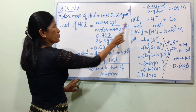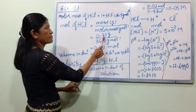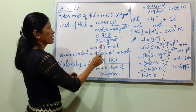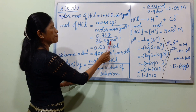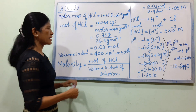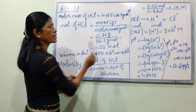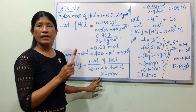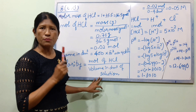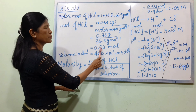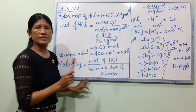The molar mass is 36.5. The mass is 0.73 grams, which gives 0.02 moles.